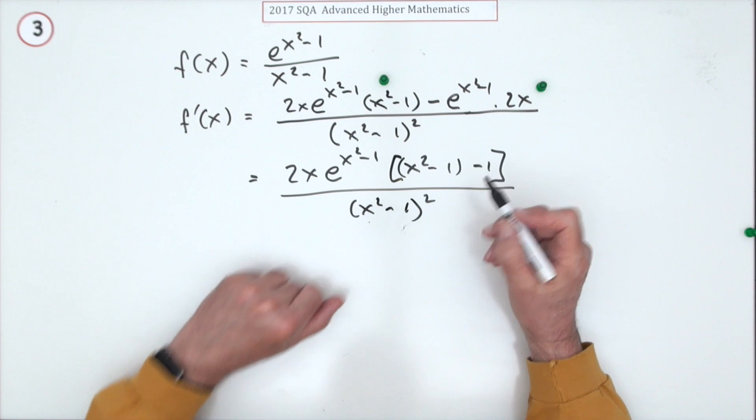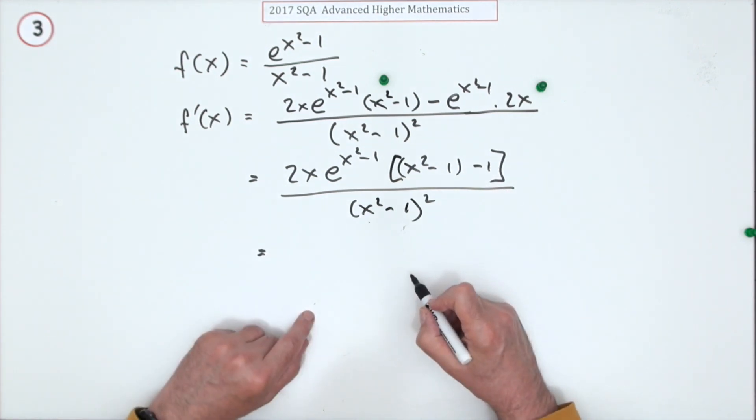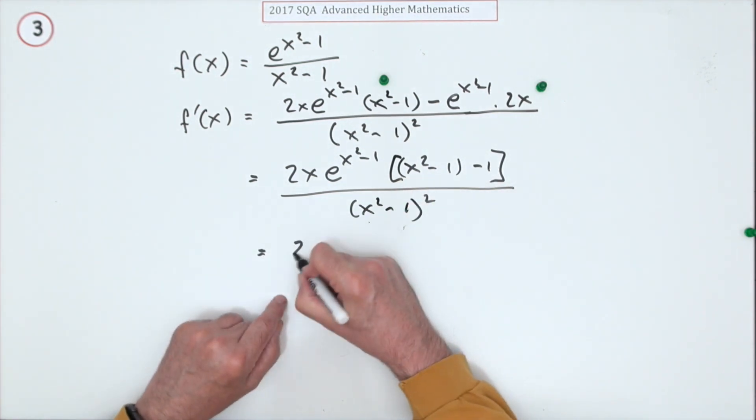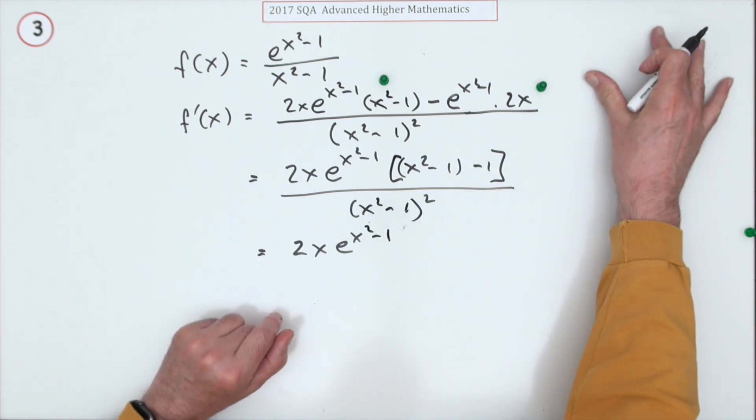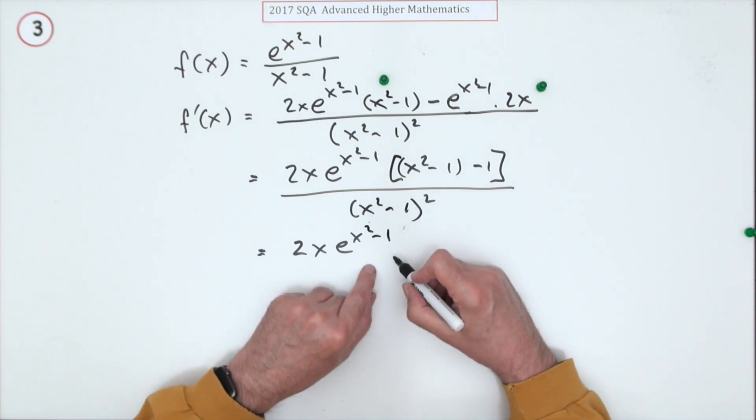That can get tidied up too. So I've got 2x × e^(x² - 1). Of course, if you'd done it with u, this is the point at which you'd be popping that back in.